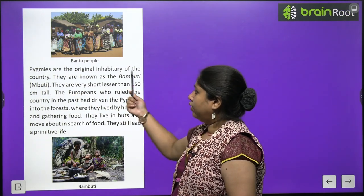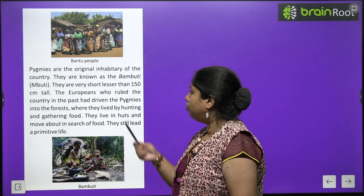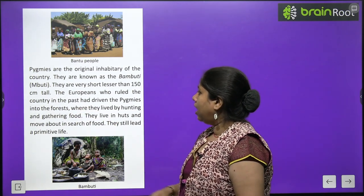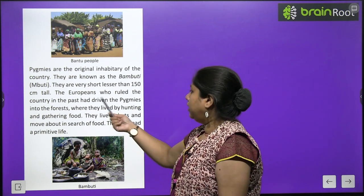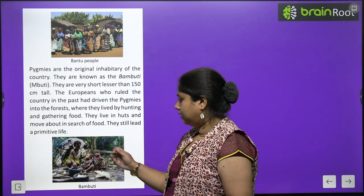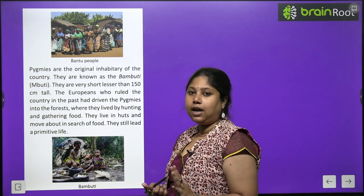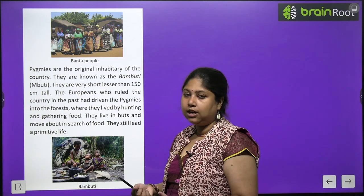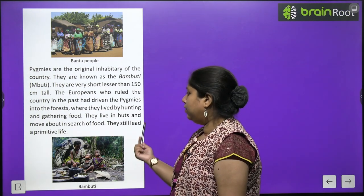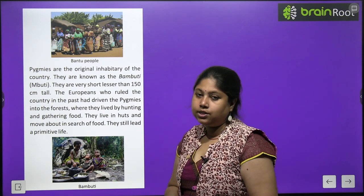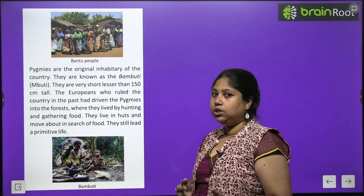Pygmies are the original inhabitants of the country. They are known as Bambuti (M-Buti). They are very short in height. The Europeans who ruled the country in the past had driven the pygmies into the forest. There, these people survived by hunting or food gathering. They live in huts and move in search of food — they still lead a primitive life, just as early men did, moving from place to place and searching for food.